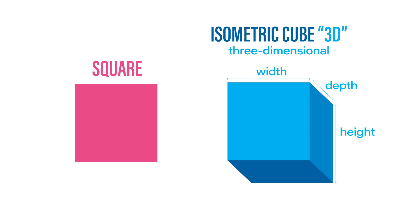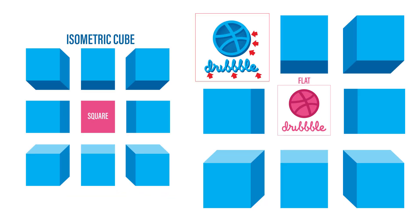Every time you see an object where you are able to see other faces, this is called 3D. Here is a simple representation of how the square looks when we move it to other positions. We now can see its depth. This works exactly the same for a logo or any other object.